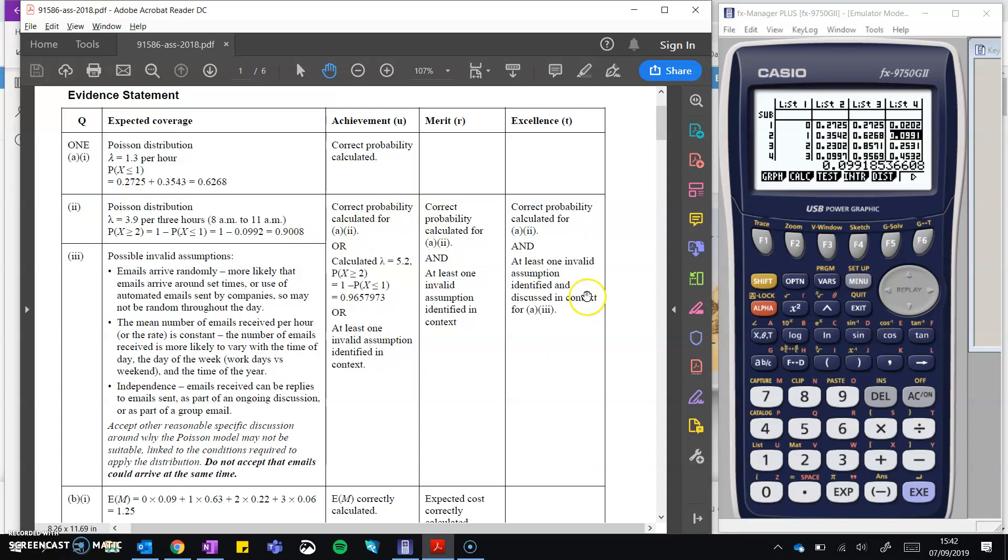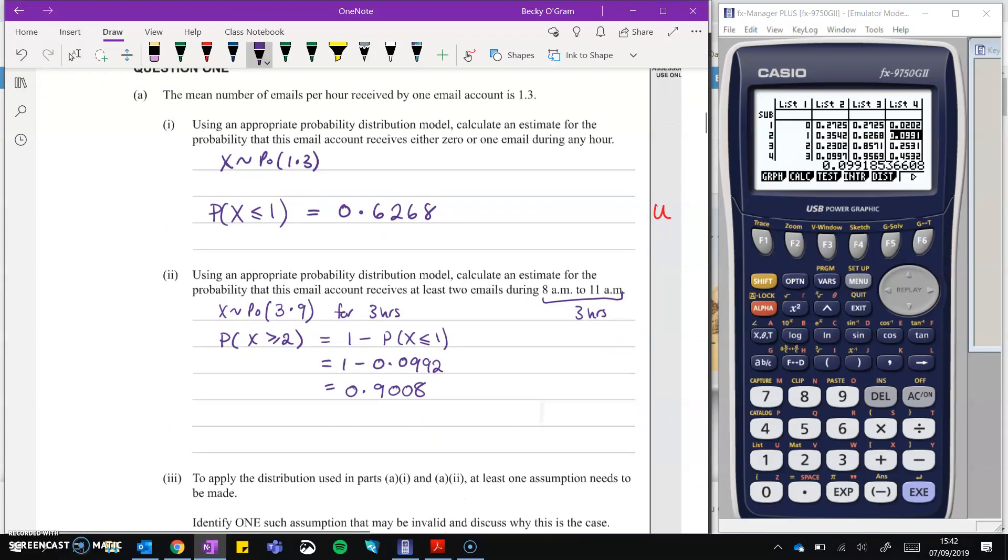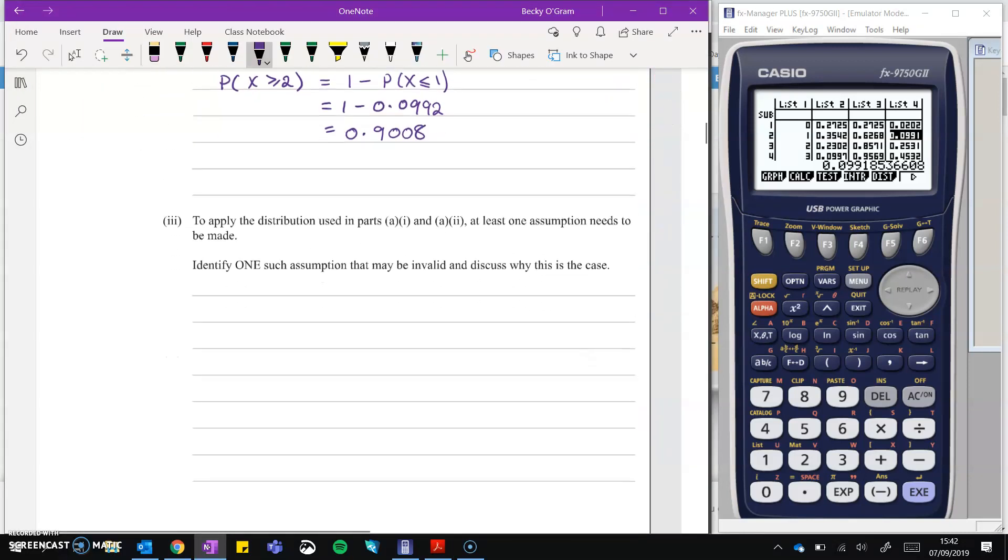And that one, oh, it looks like the marking for this depends on the next part as well. So we'll come back to the marking of these two parts. Okay, so back over to our questions. We've got, to apply that distribution, at least one assumption needs to be made. Identify one such assumption that may be invalid, so something that might not be true, and discuss why this is the case.